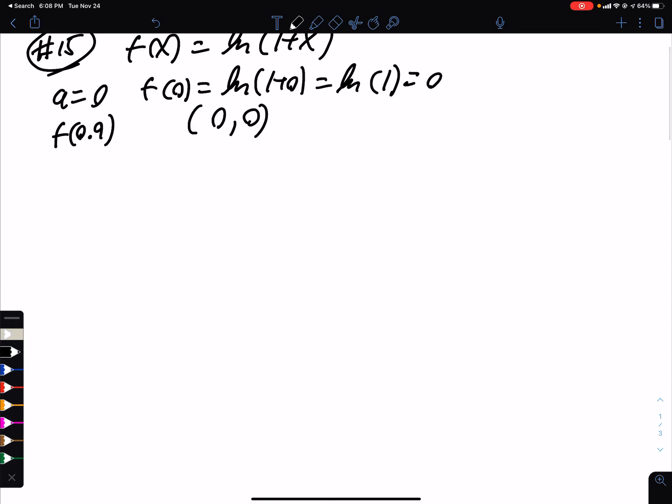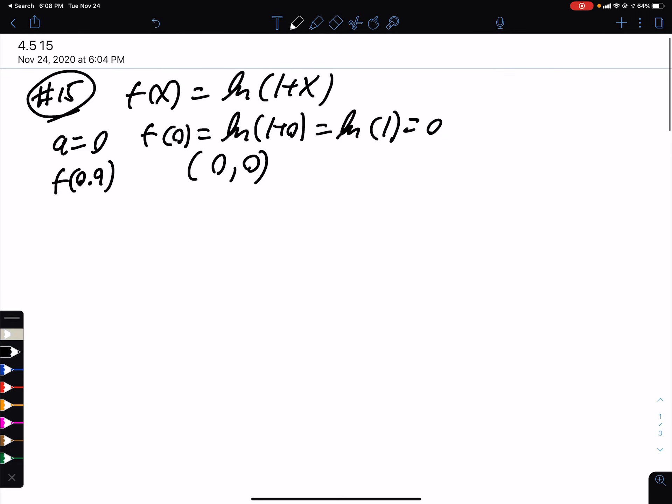So we need the slope, but the slope is going to be the derivative. So we find the derivative. Derivative of ln of box, that's going to be 1 over box, times the derivative of box, which is 1.